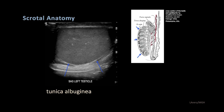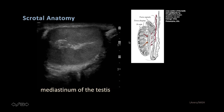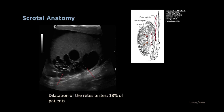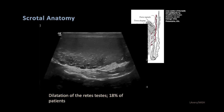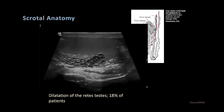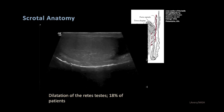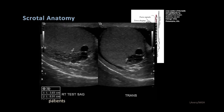Here we have the normal sagittal image of the testicle, very homogeneous in echo texture, surrounded by a very echogenic band of fibrous tissue known as the tunica albuginia. This tunica albuginia extends into the testicle and can be seen as this echogenic band in the mediastinum. At times within the mediastinum of the testis, there will be dilatation of the rete testis — anechoic dilated tubules, as seen here. This is present in up to 18% to 20% of patients and increases with age. It's a normal variant.